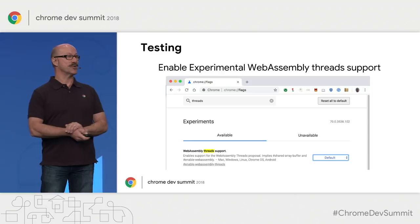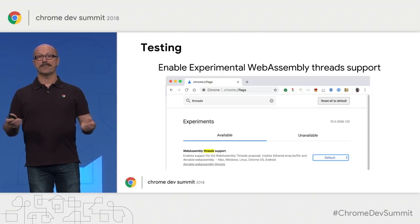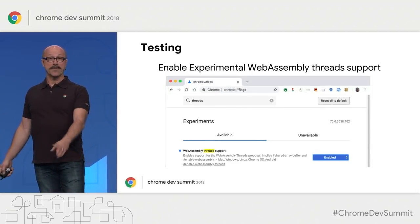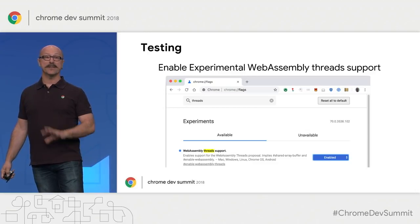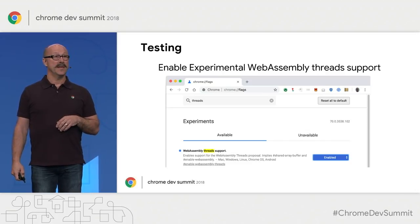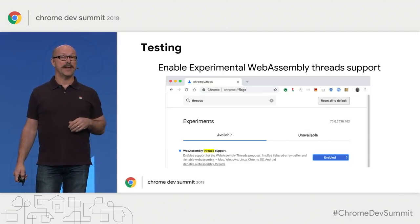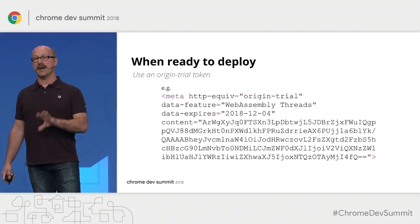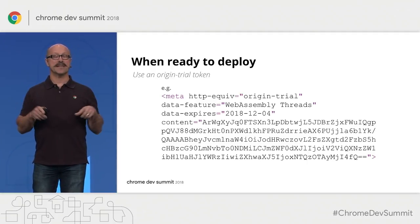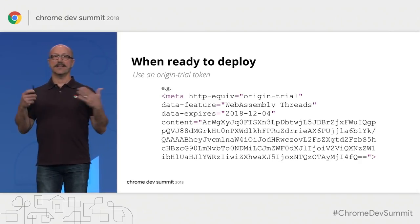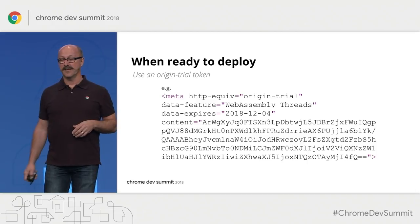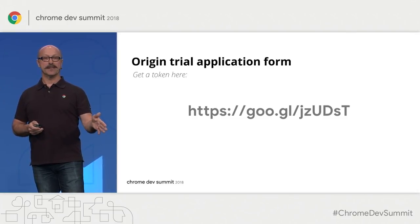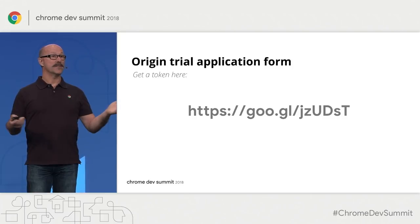If you want to get out there and actually try this, fire up Chrome 70, navigate to Chrome Flags, search for WebAssembly thread support, change the setting from default to enabled, restart your browser, and you can start building and testing locally. Once you've built a working WebAssembly threads app, you'll want to deploy it to the public. The way you do that is by getting an origin trial token. An origin trial token is tied to your domain — it's just a meta tag that you put on the page, and it tells the browser that these people are trying WebAssembly threads. Just go to the short link provided, fill in your URL and reason, and go start building something really cool.